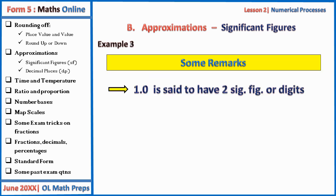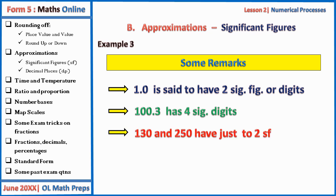Some important remarks: 1.0 is said to have two significant figures. 100.3 has four significant figures. Note carefully that 130 and 250 each have only two significant figures, not three. When a number is a whole number with no decimal, the zeros that occur at the end are not considered significant figures — they are not counted. So 130 has just two significant figures, and 250 has just two significant figures.